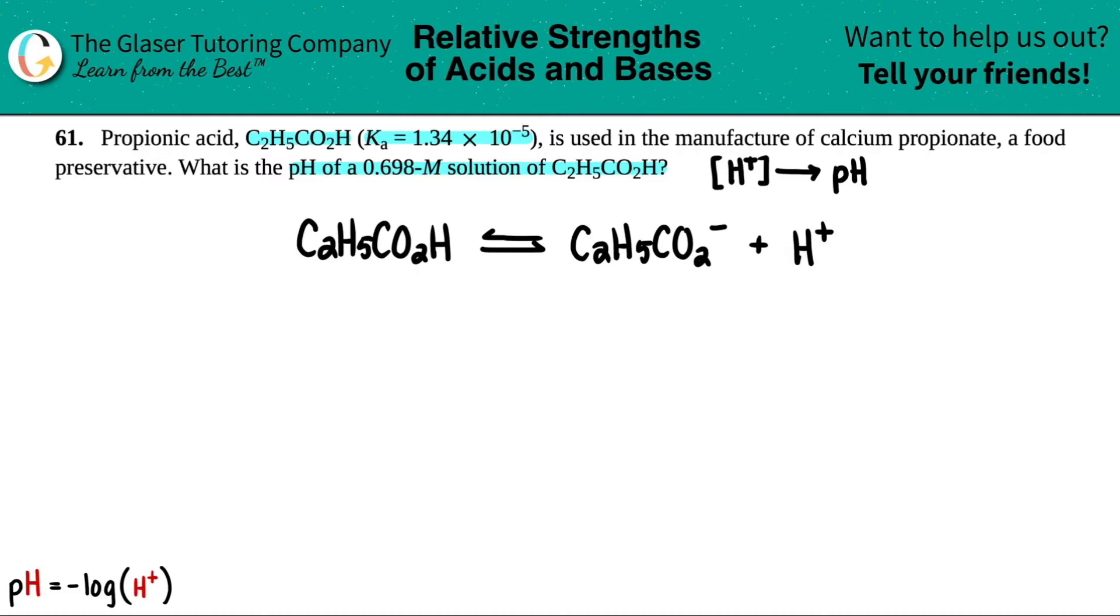But now they're saying that I have a 0.698 solution of just the propionic acid. Didn't say that I had any propionate, didn't say that I had any hydronium. So this amount, they're just telling you that you're starting off with this, literally starting. That's the same thing as an initial. And we learned from last chapter, the equilibrium chapter, that if they give you initials and they give you K values, you got to do an ICE chart. So let's start it off: I, C, E down the line.